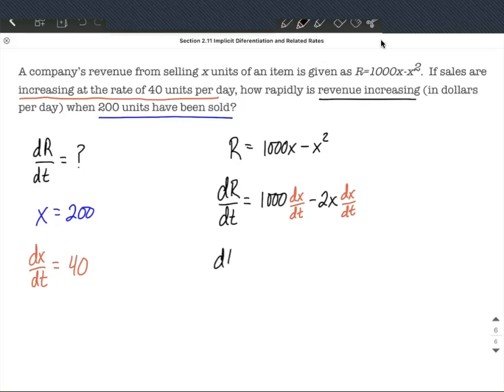All that remains really is filling in a few numbers, and we'll have our answer. So we have 1000, in dx/dt spot we're going to put positive 40 units per day, minus 2 times, in x's spot we can replace that with 200, and then in dx's spot we can say positive 40 units per day.